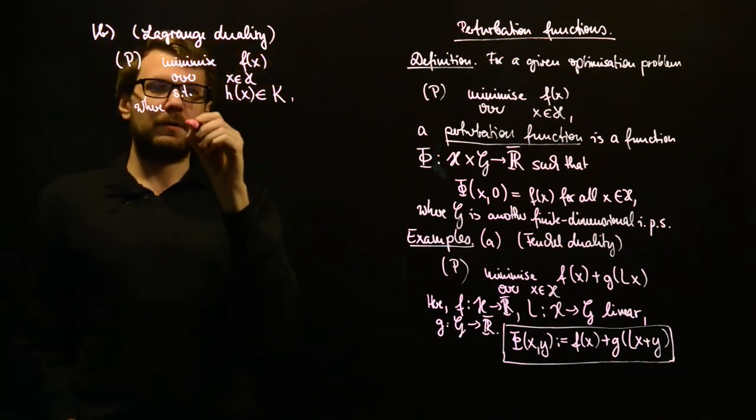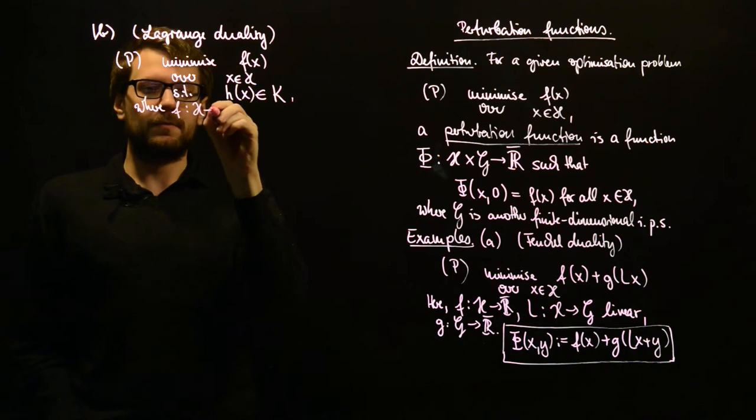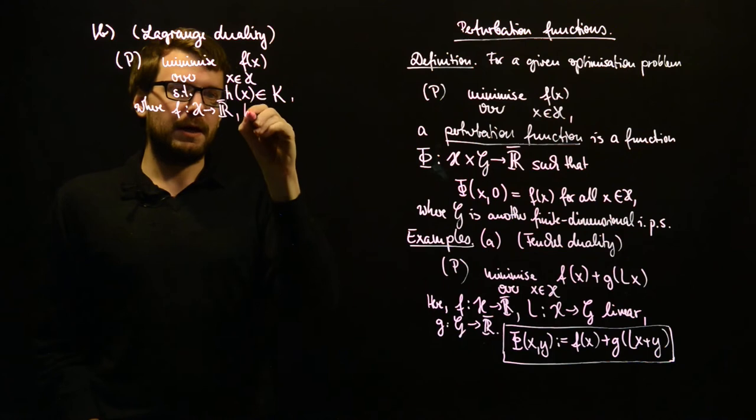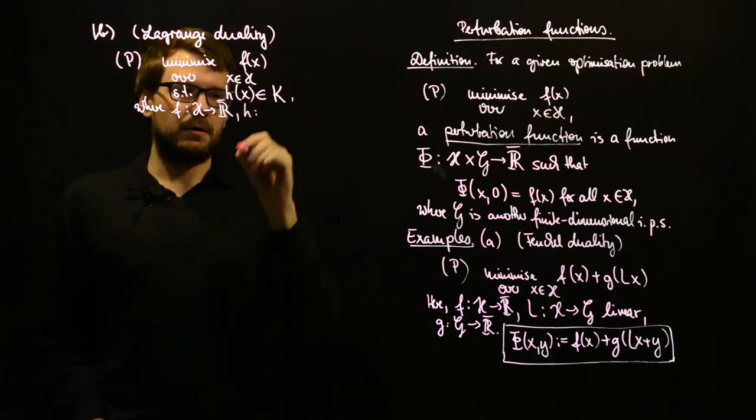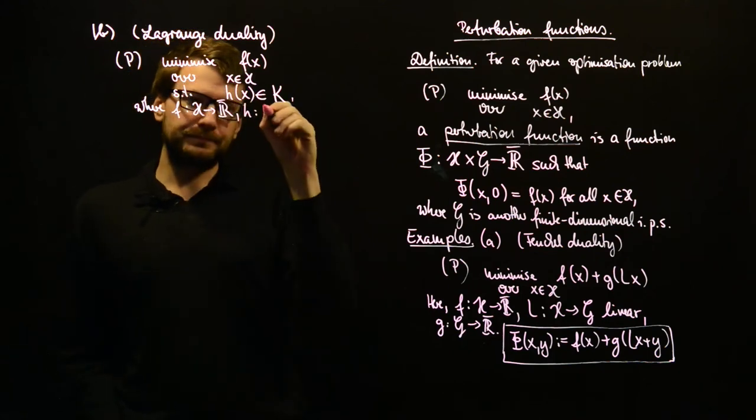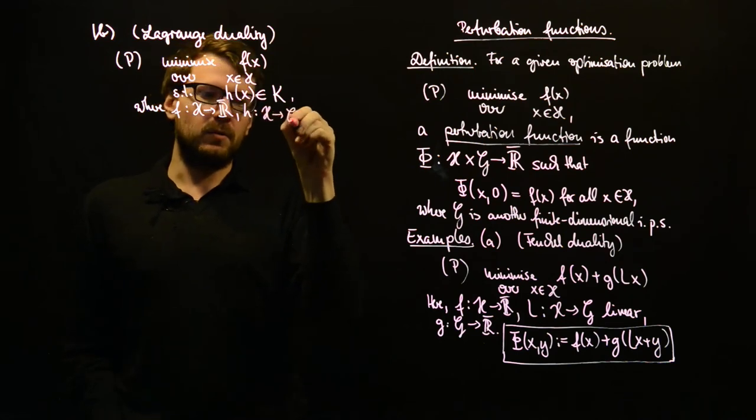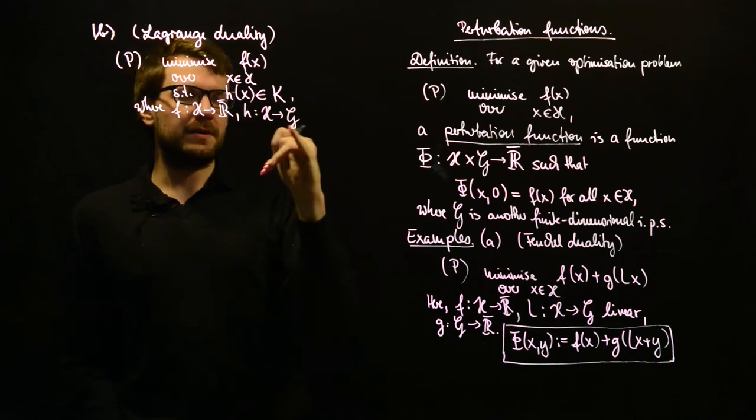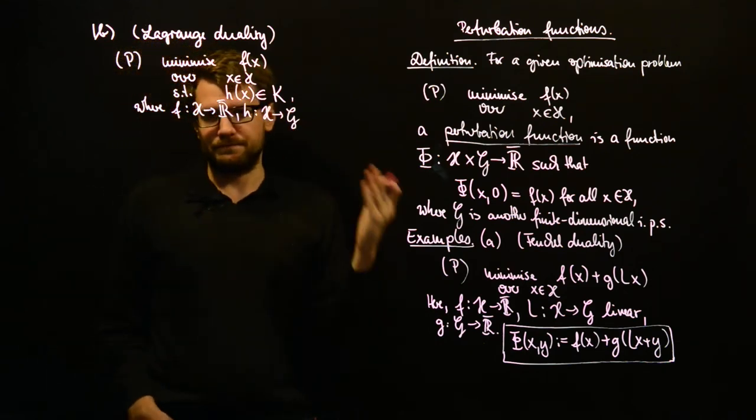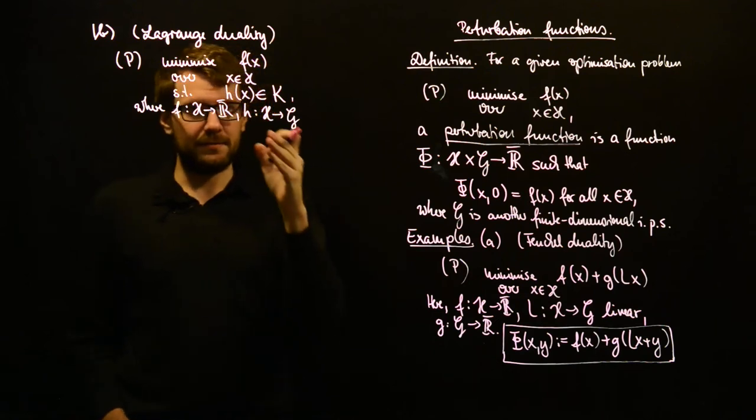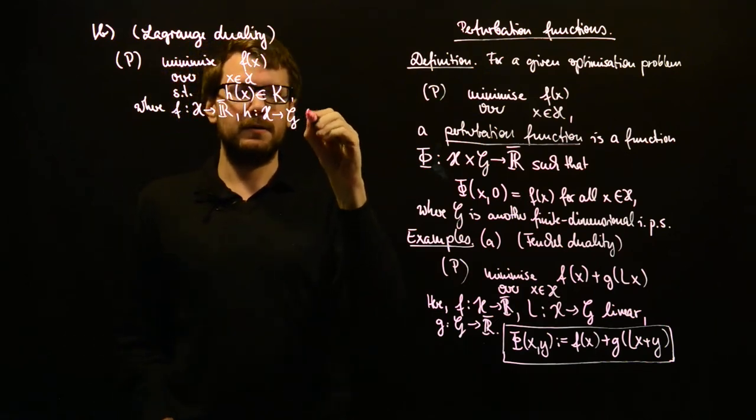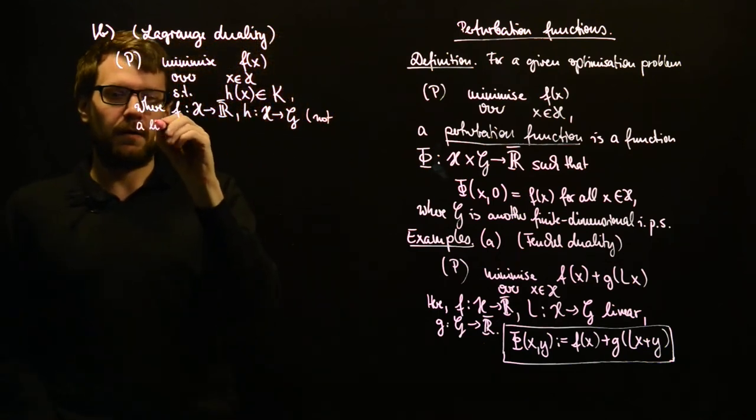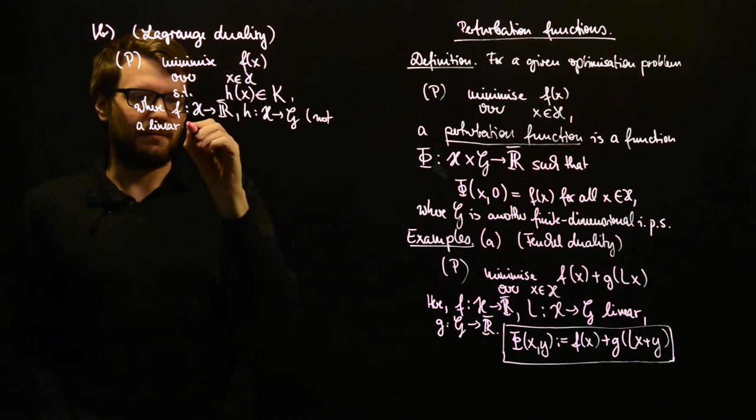Where, we are now, f should map from H to R-bar. h should map from H to the space G. And this function is not assumed to be, I mean, this is not a linear mapping. So, I should write this, not a linear mapping.